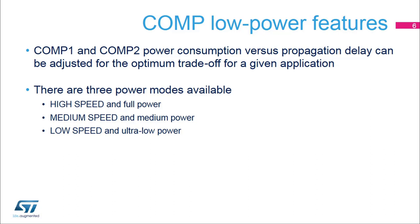High-speed mode would be preferred for power conversion applications, for example a motor control design, while ultra-low power mode would be the right choice for battery-powered applications where reaction times are not critical, for example in PIR sensor monitoring.